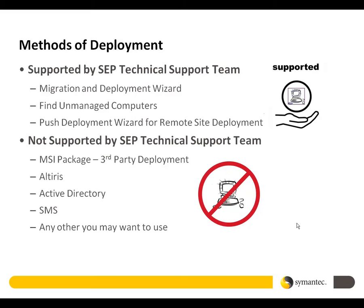There are many ways that can be used to deploy or push a Symantec Endpoint Protection client onto the Windows operating system. Some of them are supported by the Symantec Endpoint Protection technical support team and some are not. The methods supported by the technical support team are Migration and Deployment Wizard, Find Unmanaged Computers, and Push Deployment Wizard for remote site deployment.